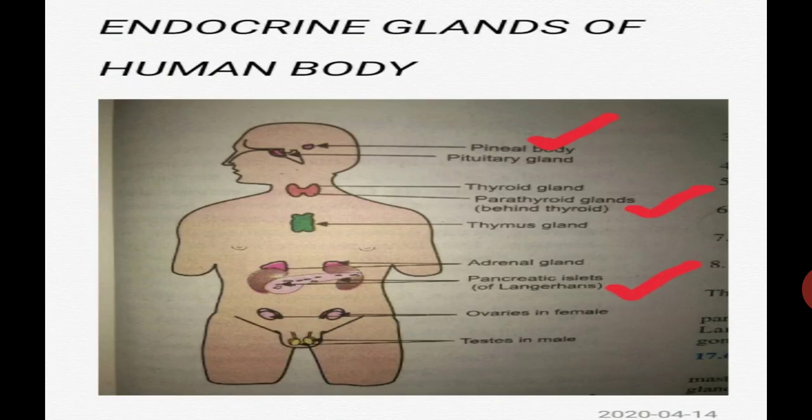In the diagram, I have also tick-marked three extra glands. Tick-marked gland number one is the pineal gland, also called the pineal body. Number two is the parathyroid gland, which is located just behind the thyroid gland. Tick-marked gland number three is the islets of Langerhans, which is a part of the pancreas. This gland secretes the hormone called insulin, which is related to diabetes.